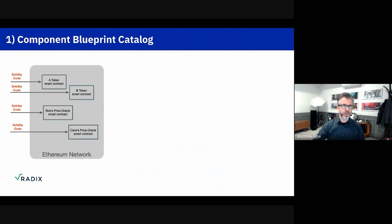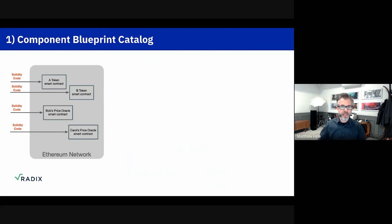So you might have a Token A, a Token B, a price oracle — all these different smart contracts are deployed individually as sort of separate independent pieces of Solidity code, and each one of those is running separately on the Ethereum ledger. Of course, they can talk to each other, which is the Lego brick composability that is very interesting for DeFi, but everything is deployed in this fairly straightforward manner.